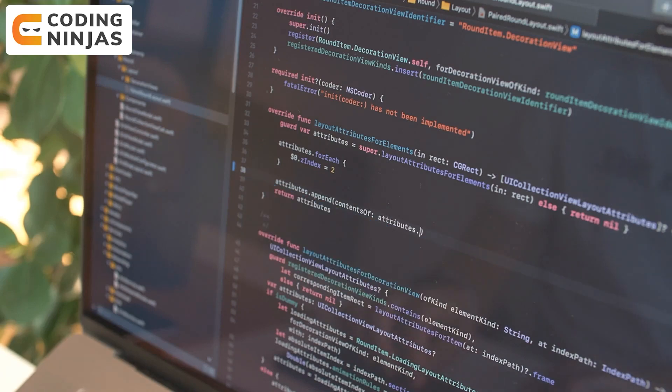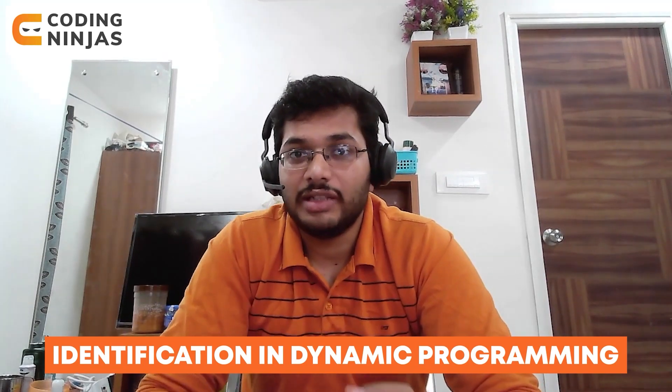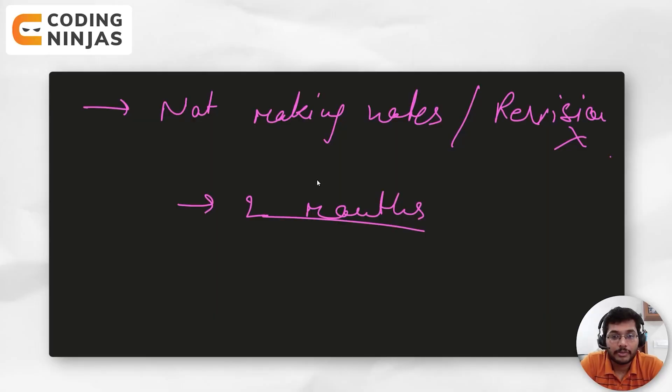The third mistake is not making notes, which meant I was not able to revise topics properly. Whenever I had to revise a topic — say, dynamic programming — after a couple of weeks I'd go back and read articles on GeeksforGeeks, but I hadn't made any notes. I understood the topic one day, implemented it, and moved on to graphs or heaps. After two months I realized I'd forgotten the basic concept of how to identify a dynamic programming problem.